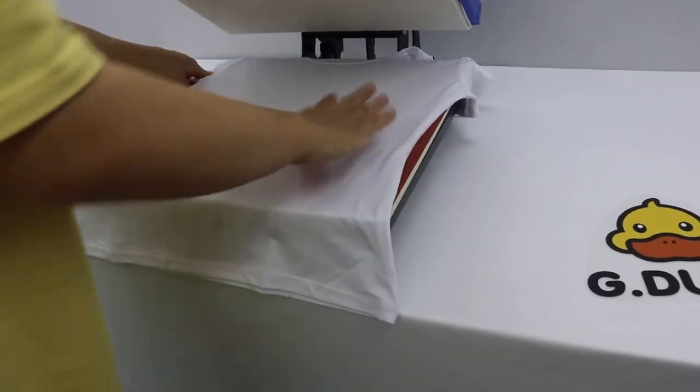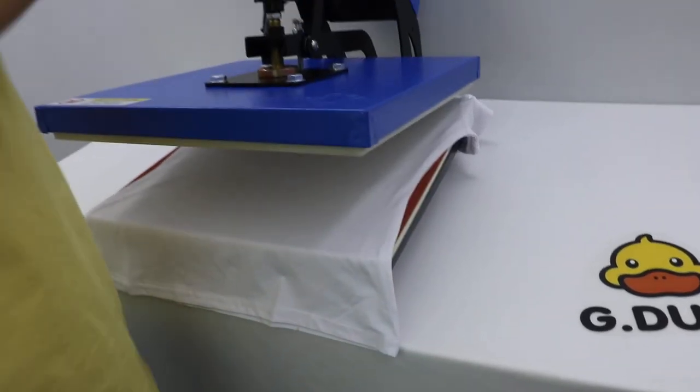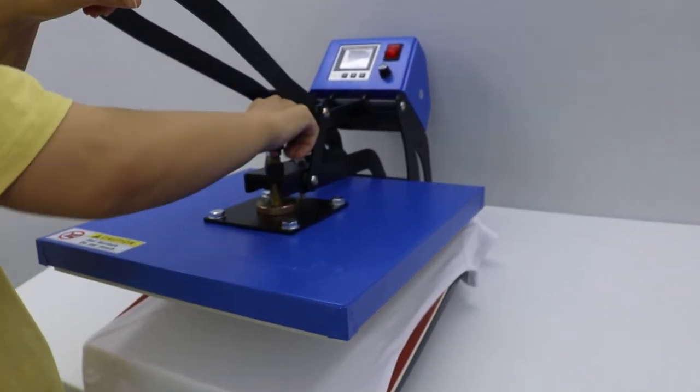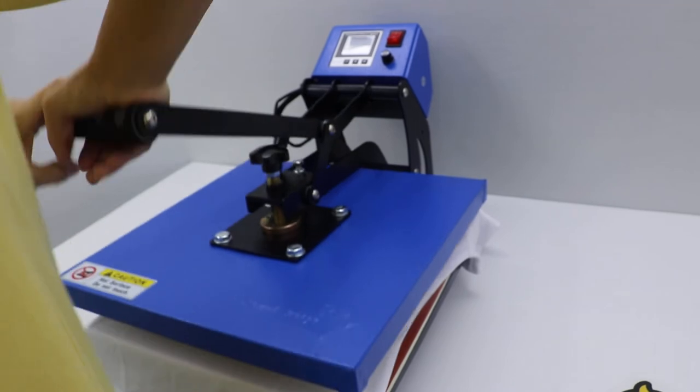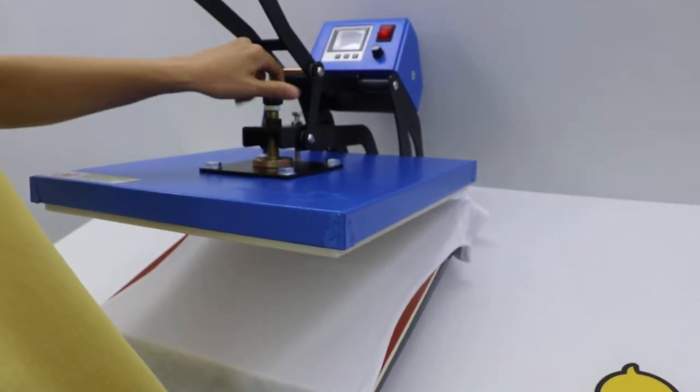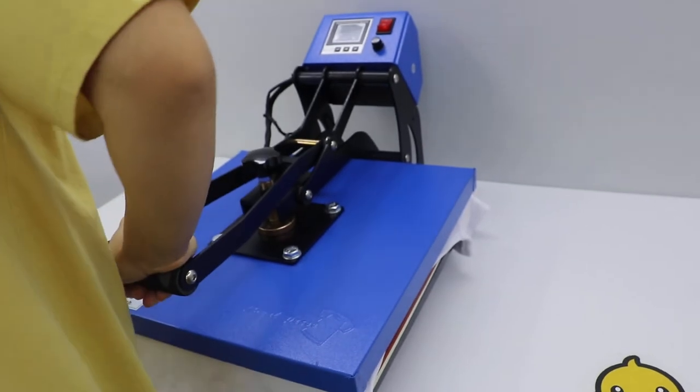And we adjust the pressure first. Clockwise to increase the pressure. Anti-clockwise to decrease the pressure. And then press down. If it's hard to press down, the pressure is enough.